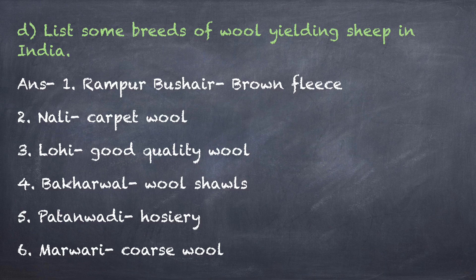D: List some breeds of wool yielding sheep in India. 1st Rampur Bushair provides us brown fleece. 2nd Nali which provides us carpet wool. 3rd Lohi which is famous for good quality wool. 4th Bakharwal which is famous for wool that can be woven into shawls. 5th Patanwadi which is used for hosiery items. 6th Marwari which gives us coarse wool.